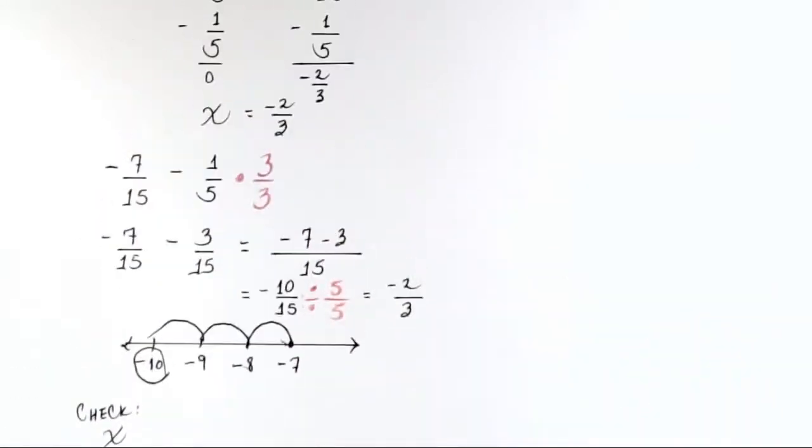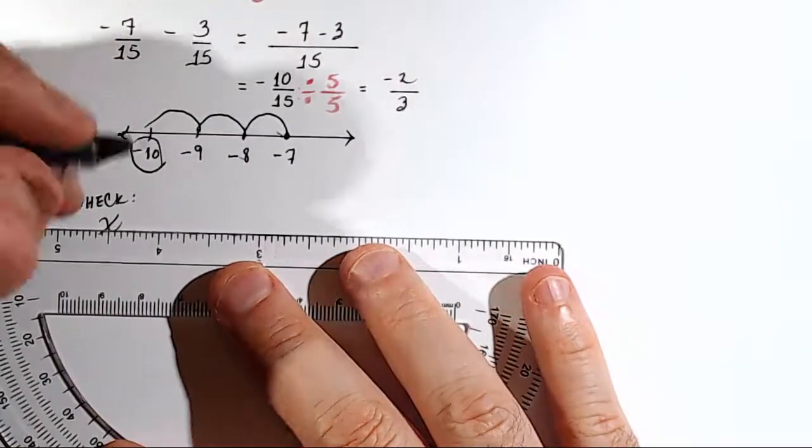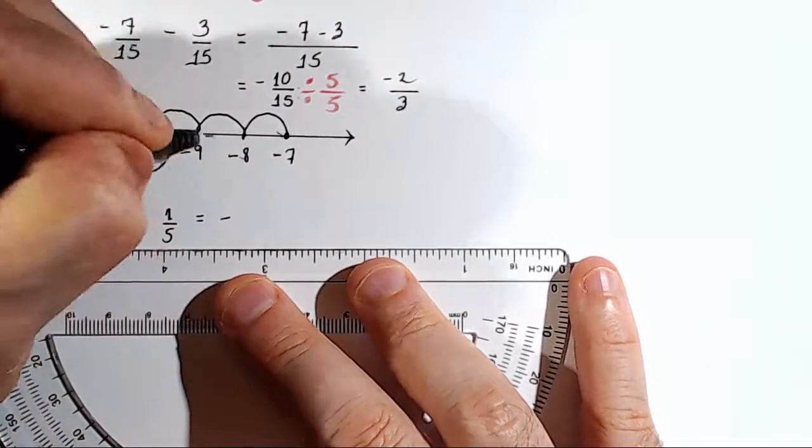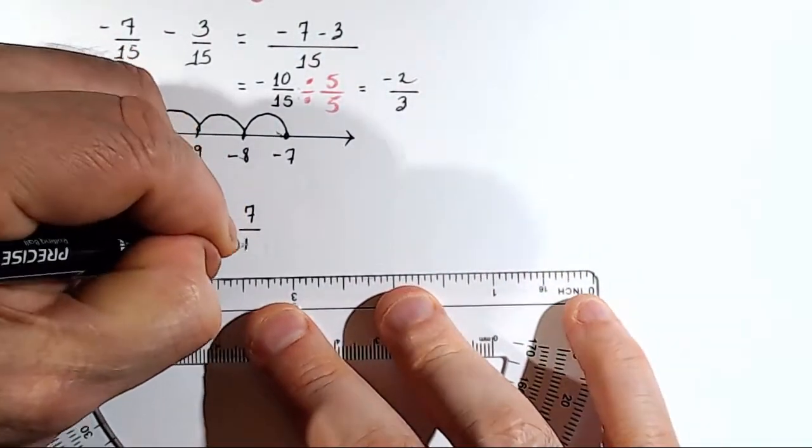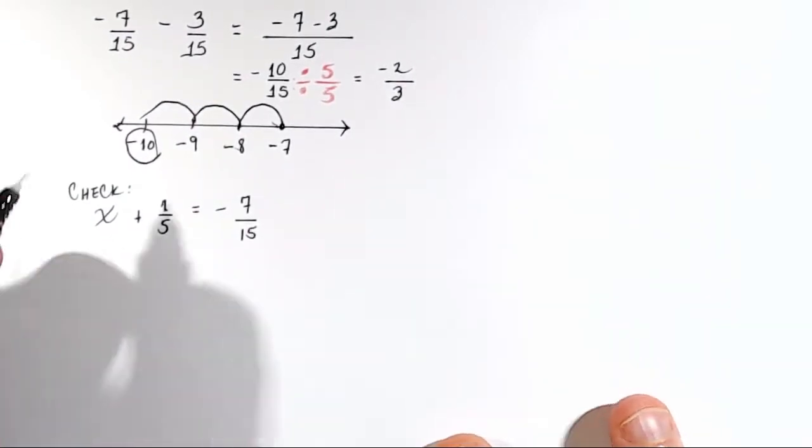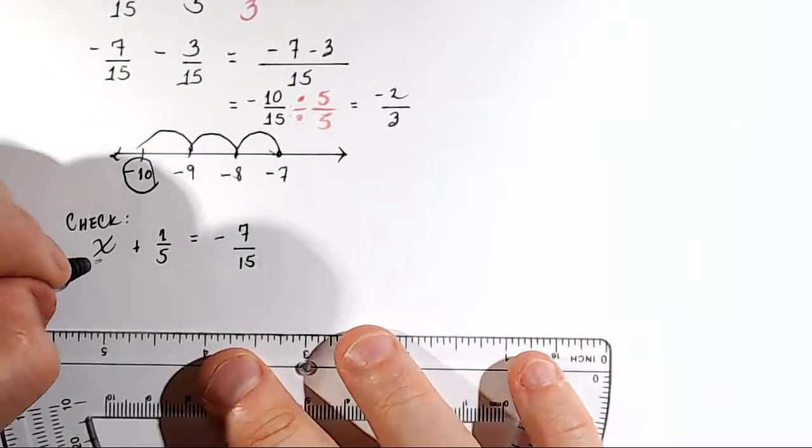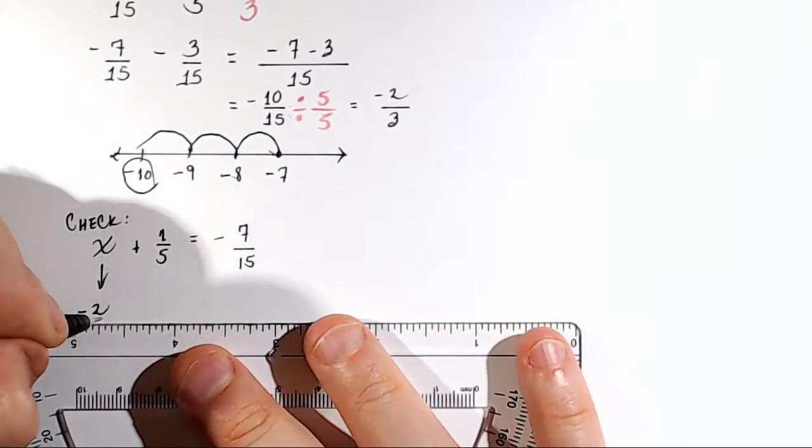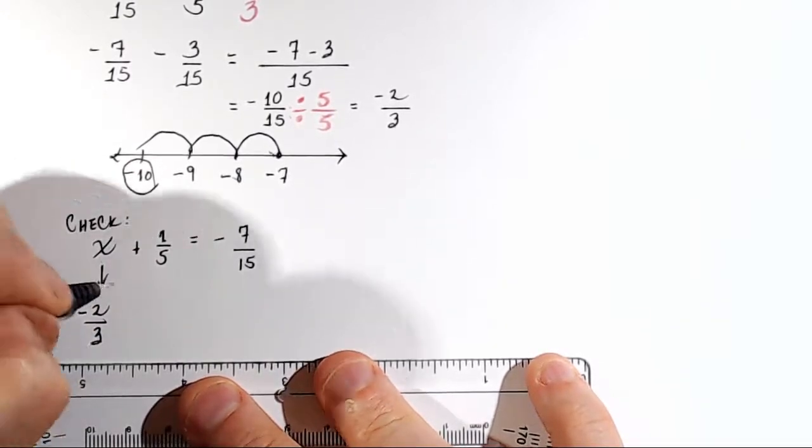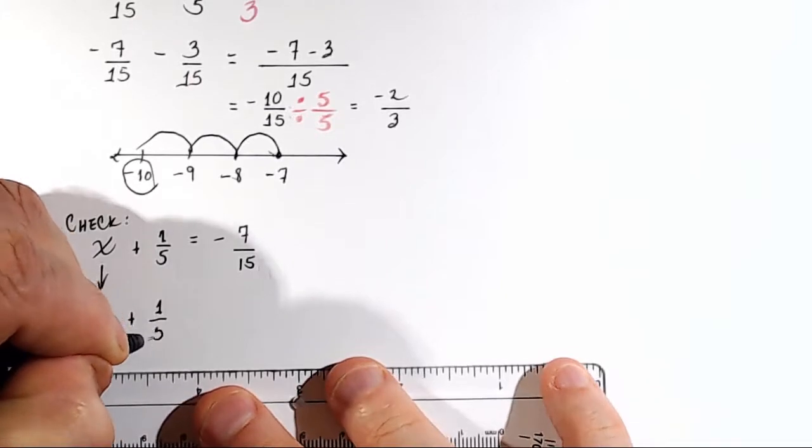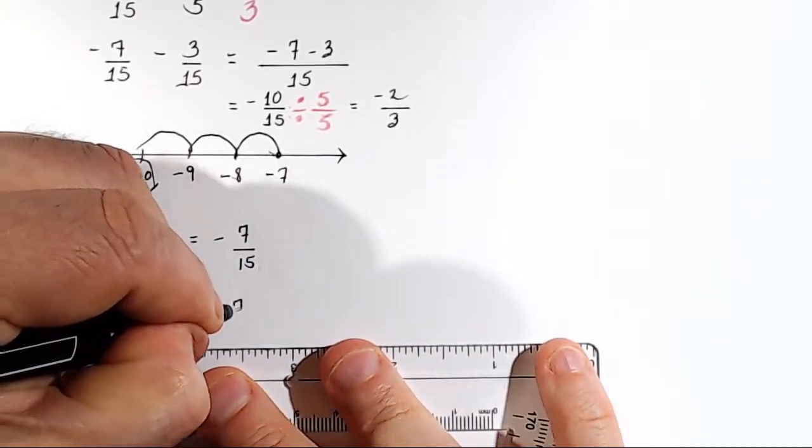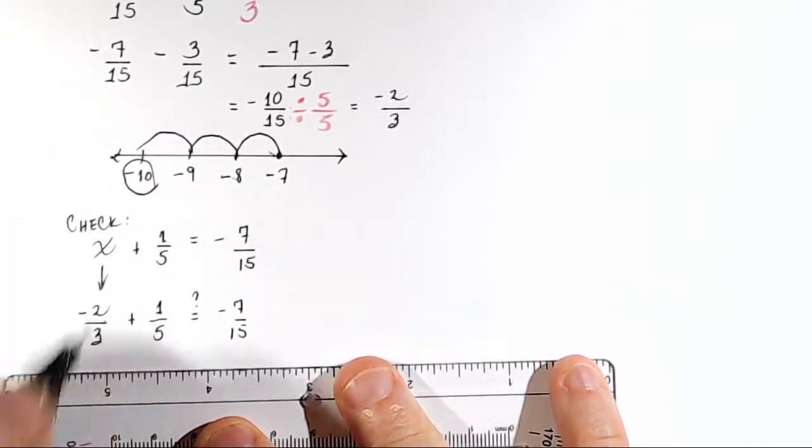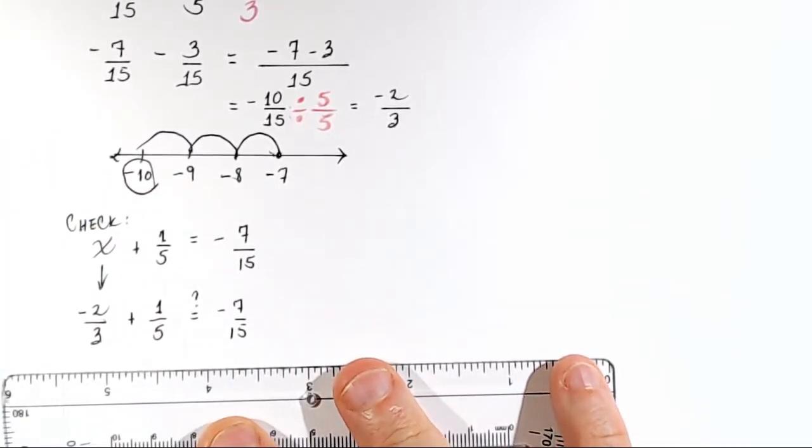The problem was x plus 1 fifth equals negative 7 fifteenths. So here's the question. If I put in negative 2 thirds for x, I'm going to substitute negative 2 thirds where x was. And I want to see, is negative 2 thirds plus 1 fifth really equal to negative 7 fifteenths? And one way you can ask that question using mathematics is you can put a question mark over the equal sign. You want to test this hypothesis.